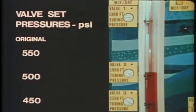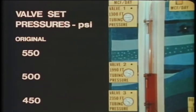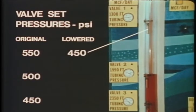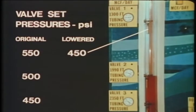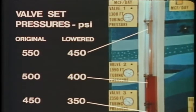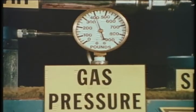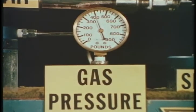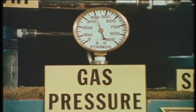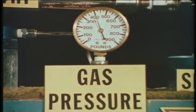To illustrate the effects of gas lift valve set pressures that allow the casing pressure to be needlessly low, we have lowered all the valve set pressures 100 PSI. The number one valve is now 450 PSI, the number two valve is now 400 PSI, and the number three valve is now 350 PSI. Gas is now being injected at number two valve at 1,990 feet. The casing pressure is 400 PSI, corresponding to the set pressure of the number two valve.